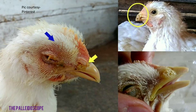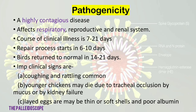This picture depicts the symptoms of the disease — there are secretions from the nose. Pathogenicity: it is a highly contagious disease affecting mainly the respiratory system, then the reproductive and renal systems. The course of illness is 7 to 21 days, but importantly the repair process starts in 6 to 10 days, so birds return to normal in 14 to 21 days. Important clinical signs are coughing and rattling. Younger chickens may die due to tracheal occlusion by mucus or by kidney failure, since the renal system is also affected.